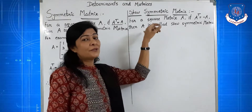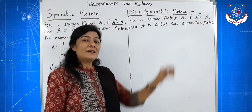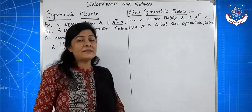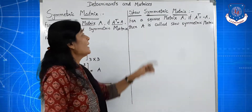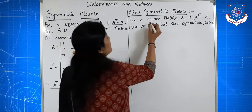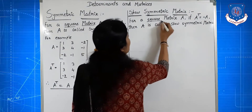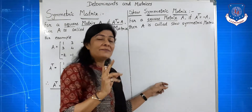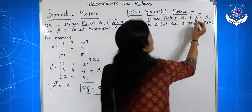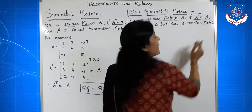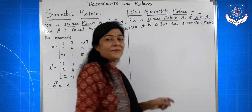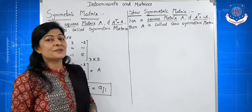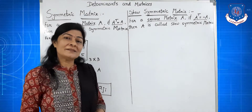Now, skew-symmetric matrix. For a square matrix A, if A transpose is equal to minus A, then A is called a skew-symmetric matrix.